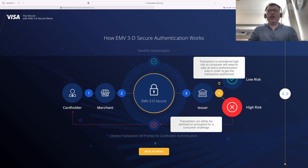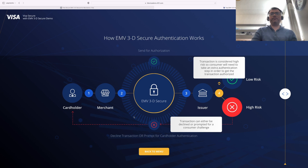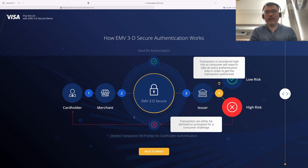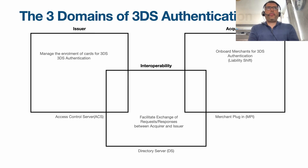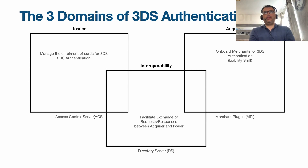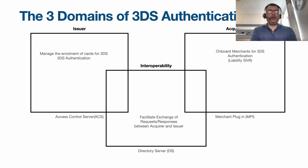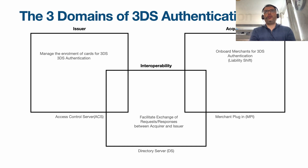Now that we've seen the two demos, we'll go back to our presentation and understand the authentication process in detail. As we all know, there are three domains which are part of the 3DS authentication mechanism. These three domains — also discussed in the last video — are the issuer domain, the acquirer domain, and the interoperability domain.